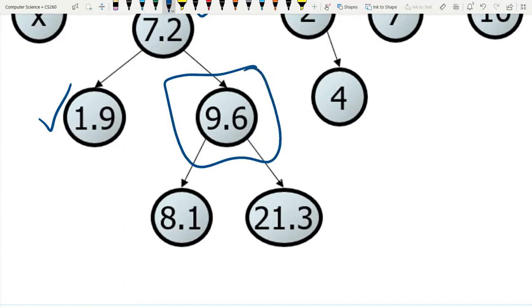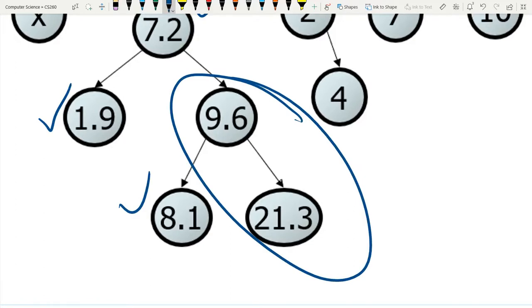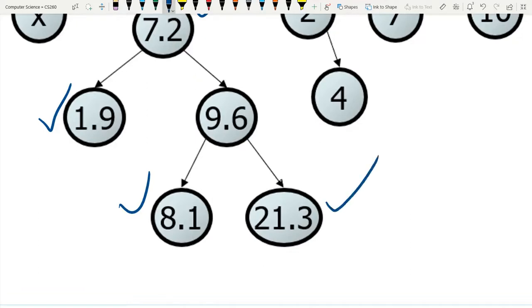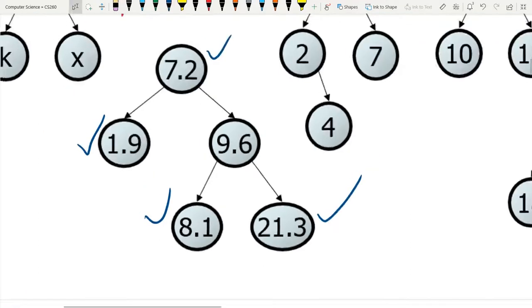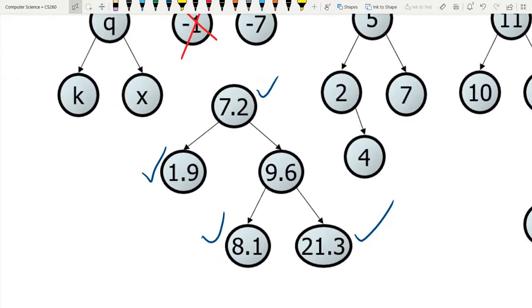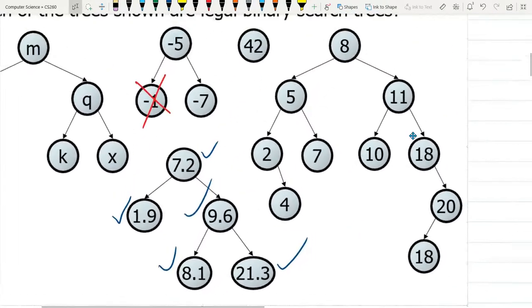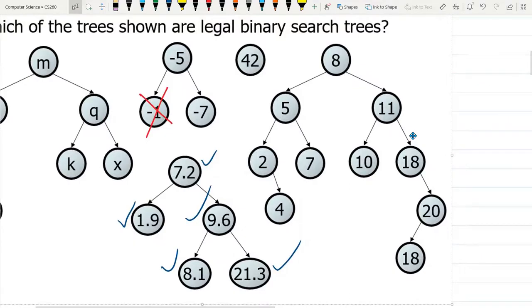We're going to start with 9.6. To the left of 9.6 is 8.1, and 8.1 is less than 9.6. So that's just fine. Now we're going to look at 9.6 and 21.3. 21.3 is to the right of 9.6. So this is a legal binary search tree. Every node checks out. Every subtree is itself a binary search tree.